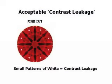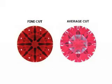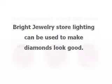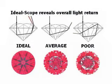Here again is how an average diamond appears compared to a finely cut diamond. Buyers should know that bright jewelry store lighting can be used to make diamonds look good, but diamonds are not always viewed in such lighting. An Ideal Scope image reveals the true nature of a diamond's overall light return and is a must for discriminating shoppers.